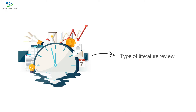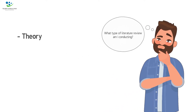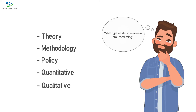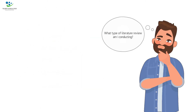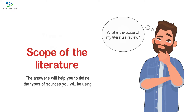Also as part of planning, you need to consider the type of literature review you are conducting by asking: what type of literature review am I conducting? Is it a theory, methodology, policy, quantitative, or qualitative review? Furthermore, you need to consider the scope of the literature by asking: what is the scope of my literature review? The answers will help you define the types of sources you will be using.